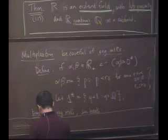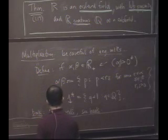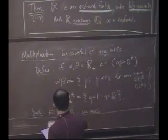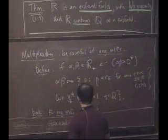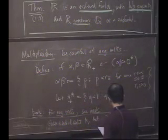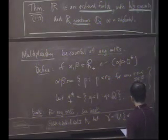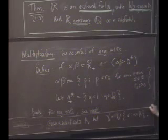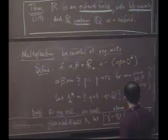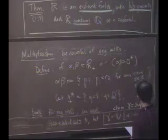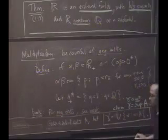So given a set of cuts A, let gamma be the union of all the alpha where alpha is in A. And the claim is — this is what I'll finish with — gamma is going to be the supremum of A. And it's a cut. Gamma is a cut, and gamma is the supremum of A.